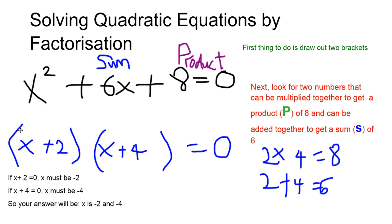First, draw out the brackets. Second, look for the two numbers, which we have done, after you've put the x in both brackets. Now, to solve it: if x plus 2 is 0, x must be negative 2. And if x plus 4 is 0, x must be negative 4. So, your answer will be negative 2 and negative 4.